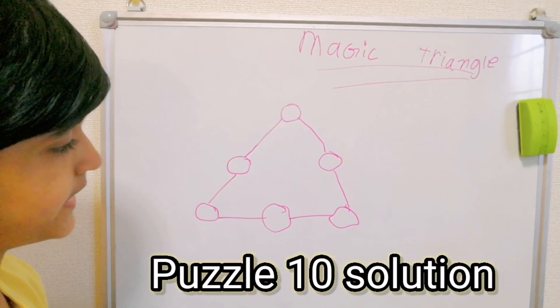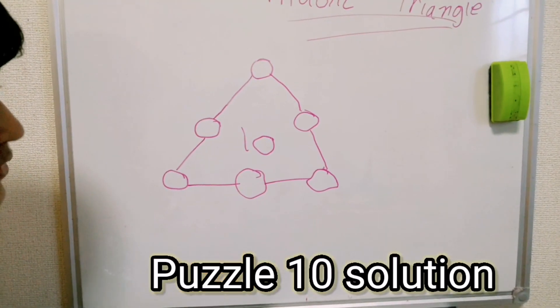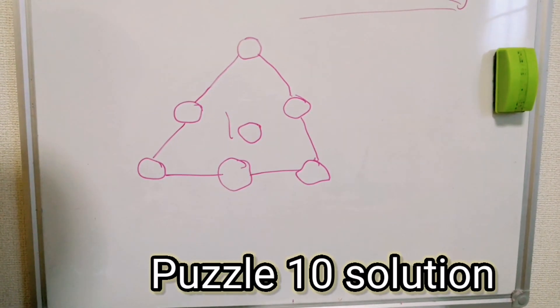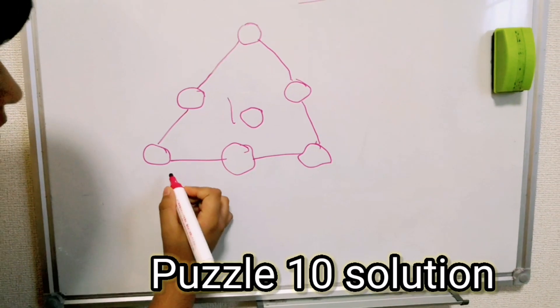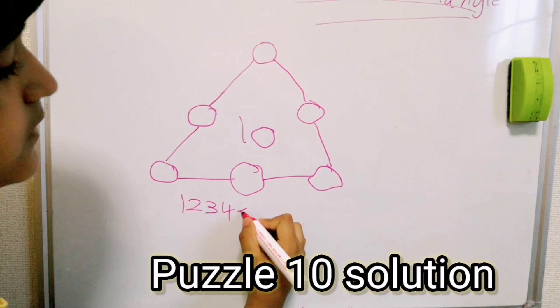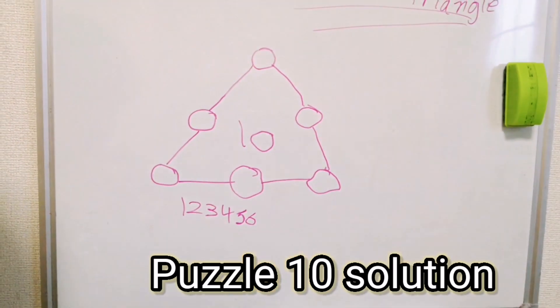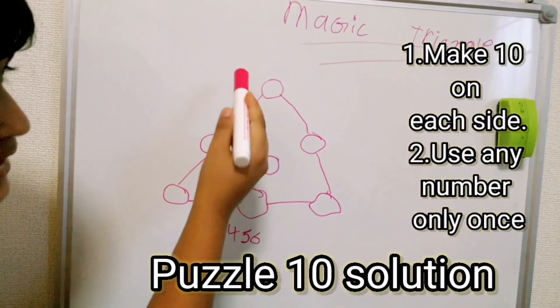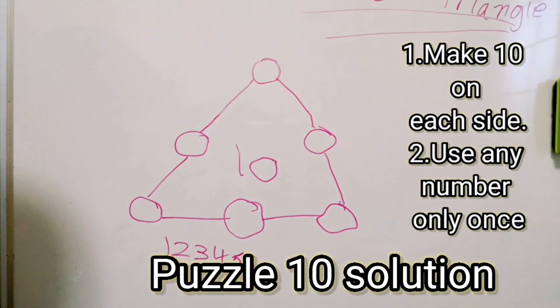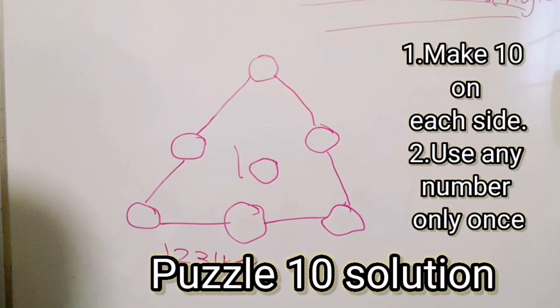We will call 10 the magic sum of this triangle. I made 6 circles, and 6 circles means I can only take 6 numbers to make 10. We will make 10 on each side. We can only use these numbers only once. I'm going to place the numbers so each side has the same sum. So let's get started!